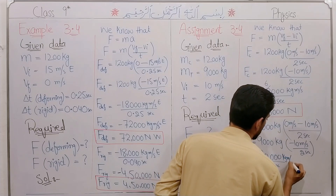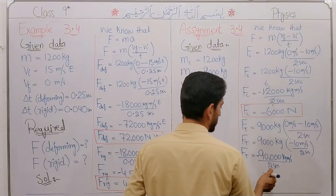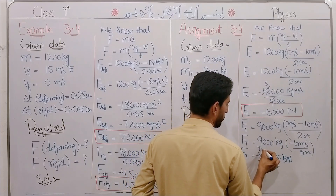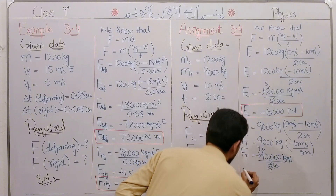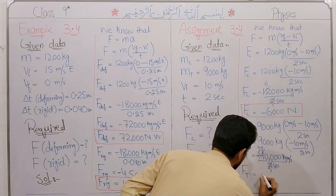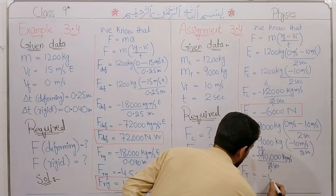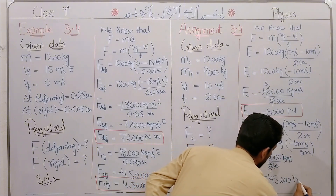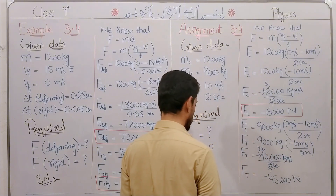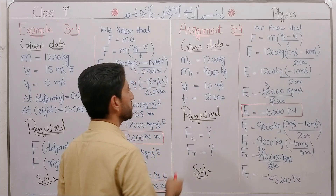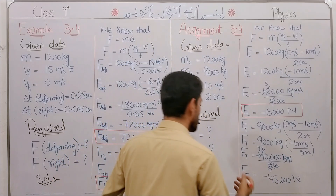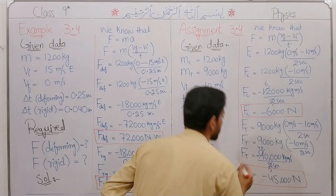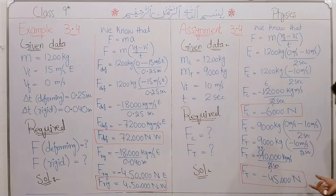Calculating: 9,000 multiplied by 10 gives 90,000, divided by 2 gives 45,000. The force on the truck is minus 45,000 Newton. The truck stops in 2 seconds with a 45,000 Newton force applied in the opposite direction.